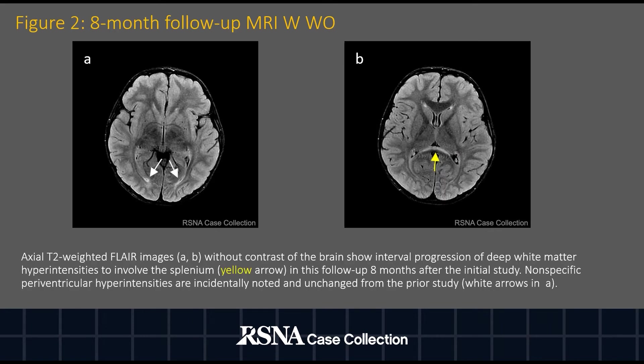Eight months later, a follow-up MRI was performed. At that time, the axial T2-weighted FLAIR images without contrast of the brain showed interval progression of deep white matter hyperintensities to involve the splenium. Nonspecific periventricular hyperintensities are incidentally noted and unchanged from the prior study.